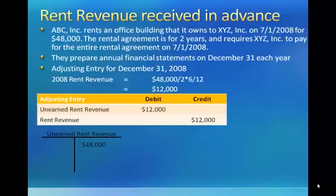This adjusting entry records the $12,000 of rent revenue that ABC Inc. earned in 2008, and also reduces the unearned rent revenue liability account to reflect that ABC Inc. only owes $36,000 of rent services in the future as of December 31, 2008.